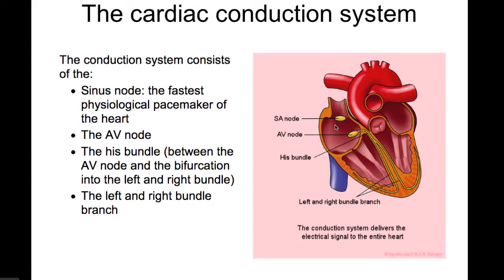It starts with the sinus node, which is the fastest physiological pacemaker in the heart. It is a group of cells in the roof of the right atrium that shows spontaneous firing.